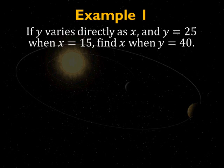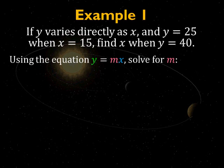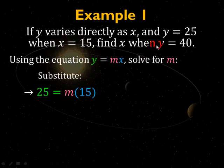For example one, if y varies directly as x and y equals 25 when x equals 15, you are to solve for x when y equals 40. So, you take your equation, y equals mx, you're first going to solve for m using the two points, the two values of x and y that you're given. So, you plug those in.